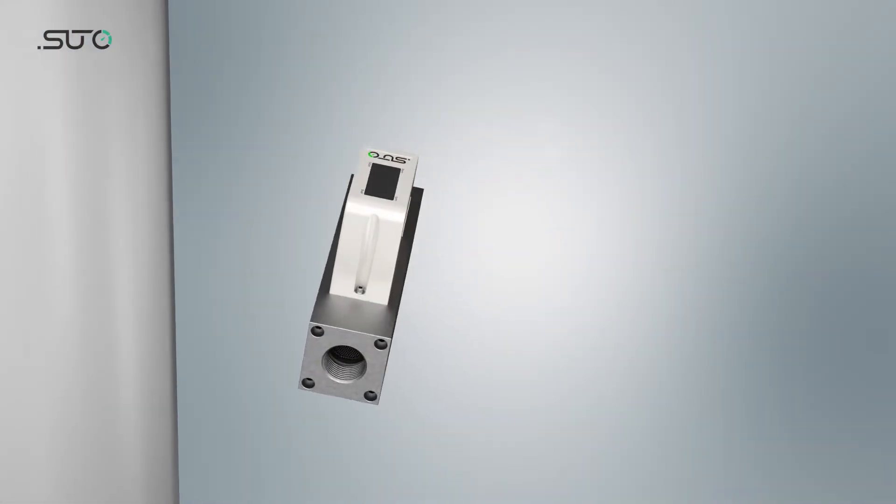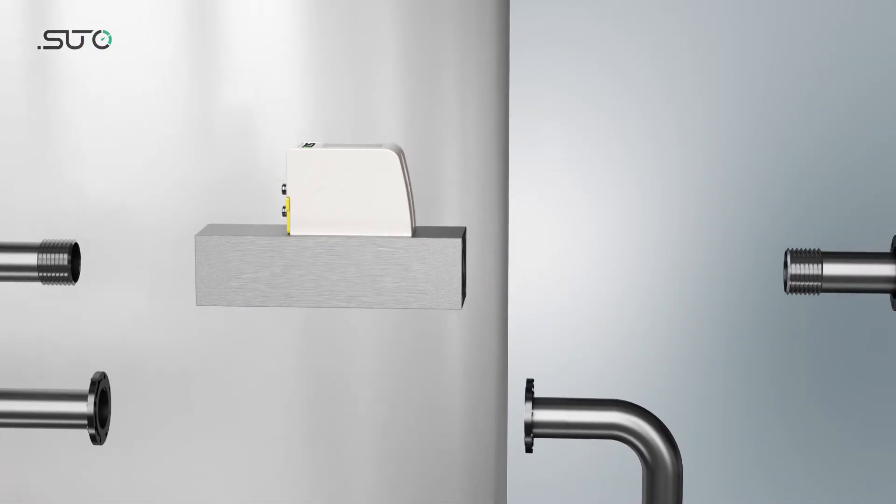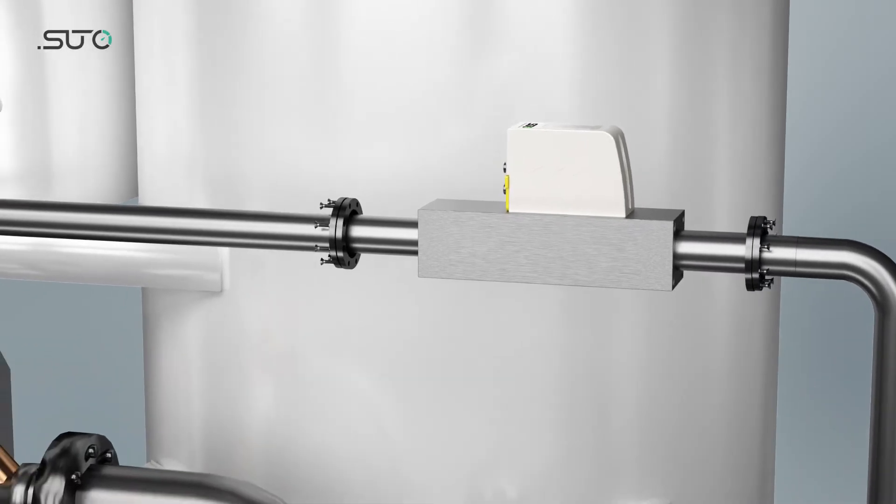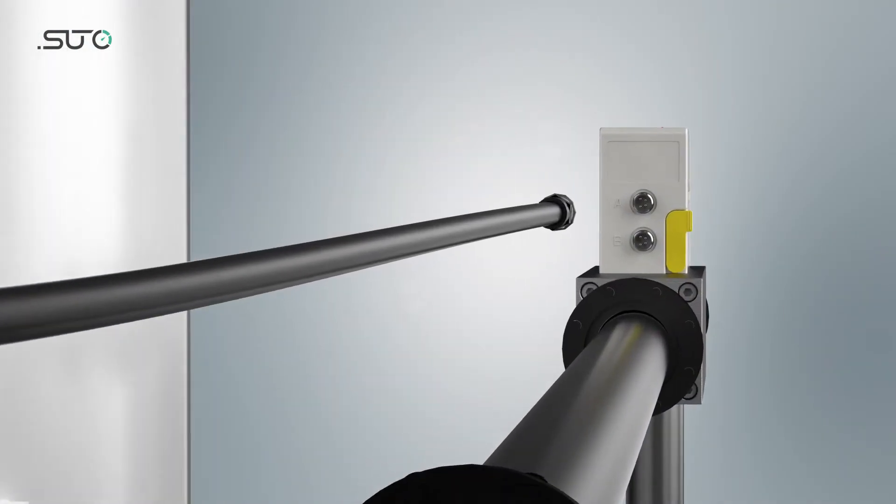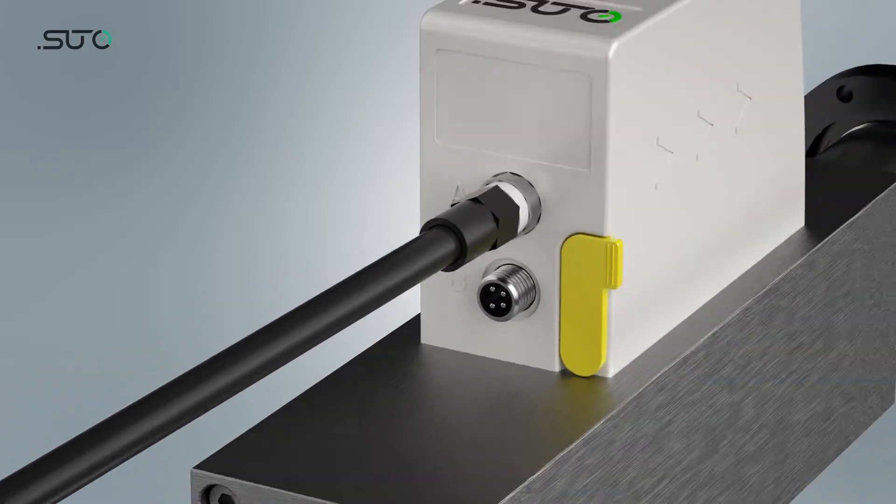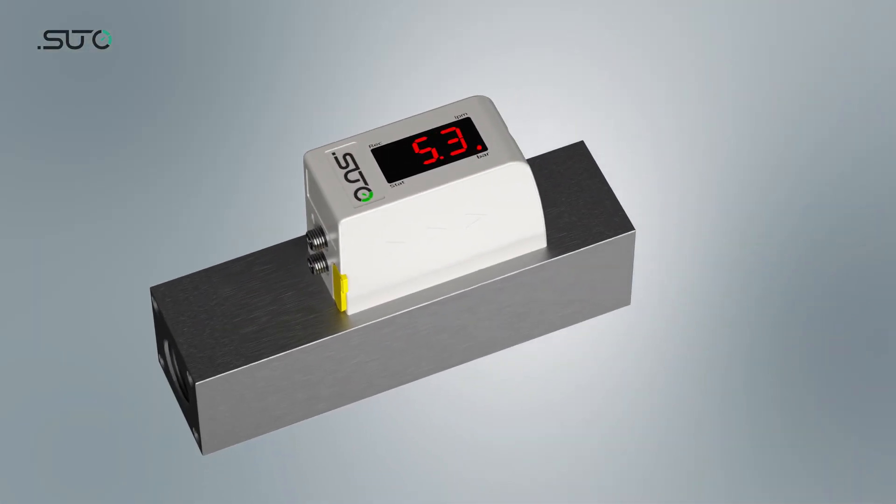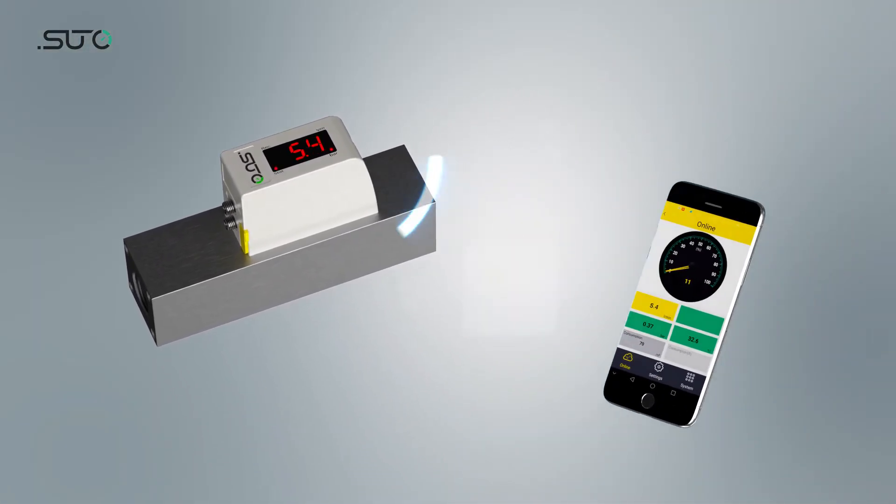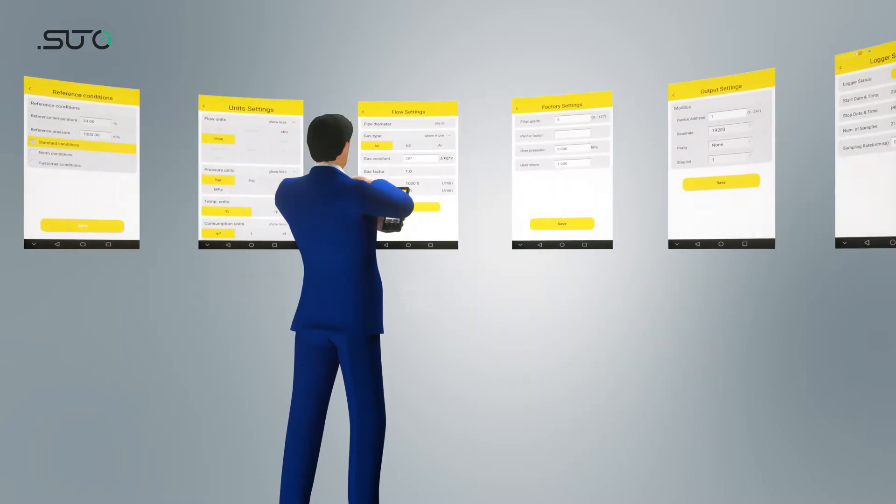S418 flow meter monitors air consumption and pressure at the machine level. The local display shows real-time flow rate and pressure. Through the integrated Bluetooth interface, operators can retrieve status and measurement data.